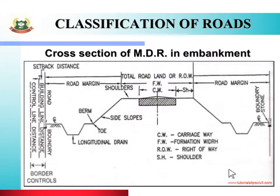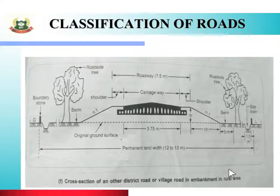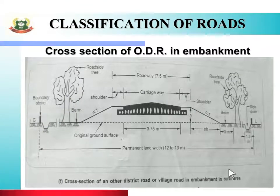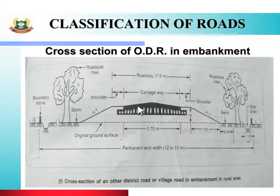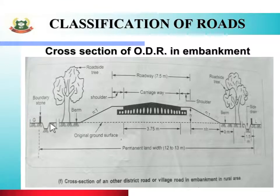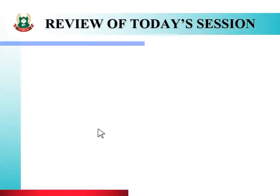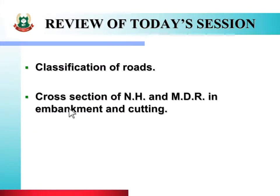Next, we will see cross section of other district road in embankment. See the picture of cross section of other district road in embankment — जैसे की आप यहाँ carriageway, roadway, shoulder, side drain इत्यादी road geometrical components देख सकते हो. In this way, in today's session, we studied about classification of roads, cross section of national highway and major district road in embankment and cutting.